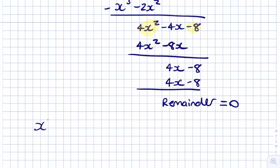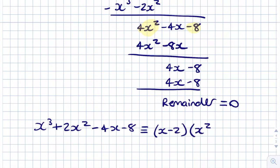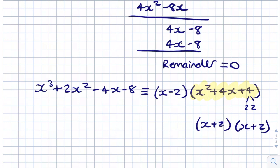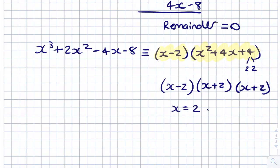So x³ + 2x² - 4x - 8 is equivalent to (x - 2)(x² + 4x + 4). We can simplify the quadratic further: x² + 4x + 4 factorises to (x + 2)(x + 2), since 2 × 2 = 4 and 2x + 2x = 4x. Bringing the (x - 2) factor down, we get solutions x = 2 or x = -2, where x = -2 is a repeated root.